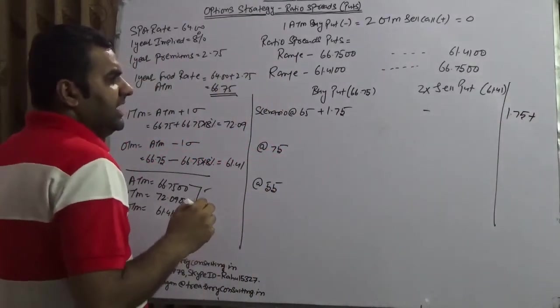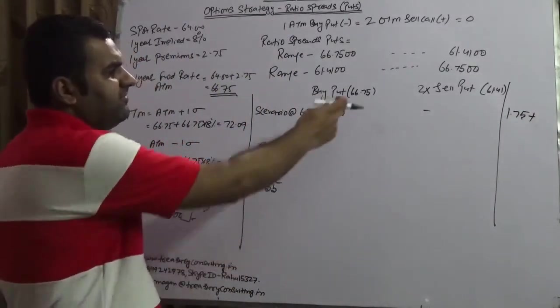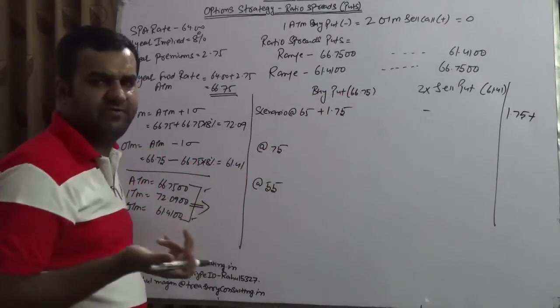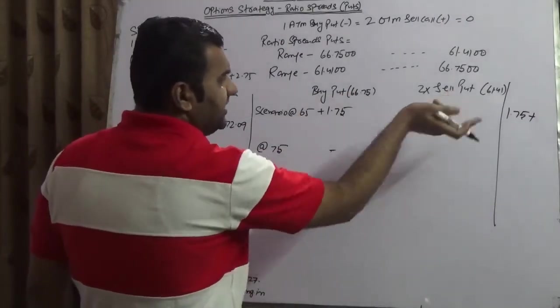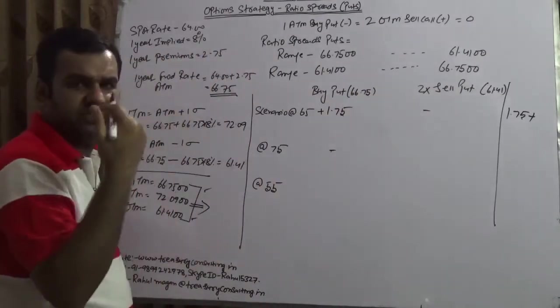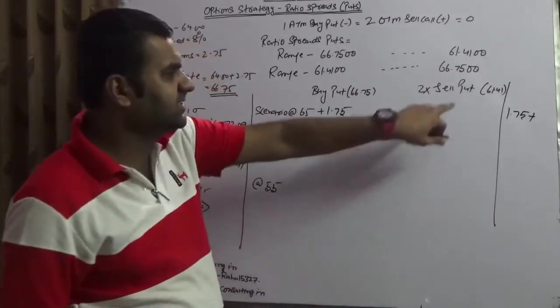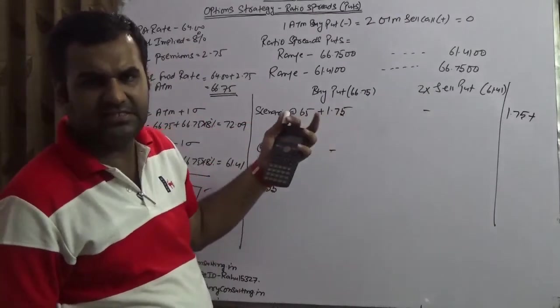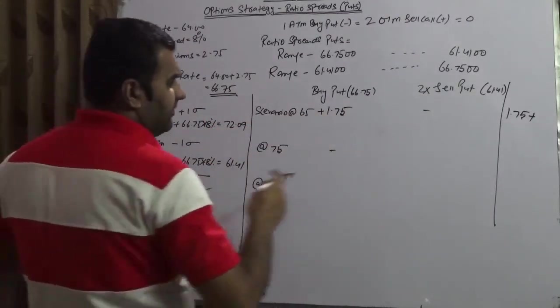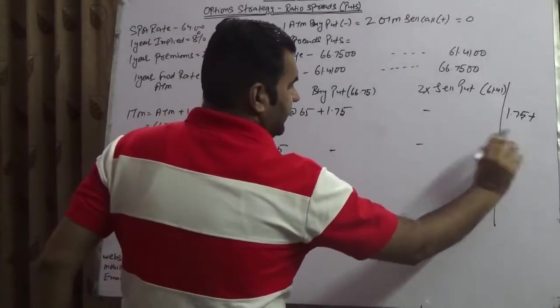At 75, he has a right to sell at 66.75. Market is at 75. Worthless. Here he has a right to sell at 61.41, but market is at 75. Again, worthless. So net would be worthless.